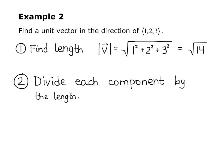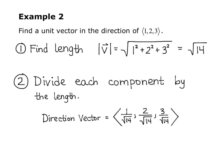The second step is to divide each component by the length. The first component is 1, so 1 over square root of 14. The second component is 2, so 2 over square root of 14. The third component is 3, so 3 over square root of 14. The direction vector is angle bracket 1 over radical 14, 2 over radical 14, 3 over radical 14.